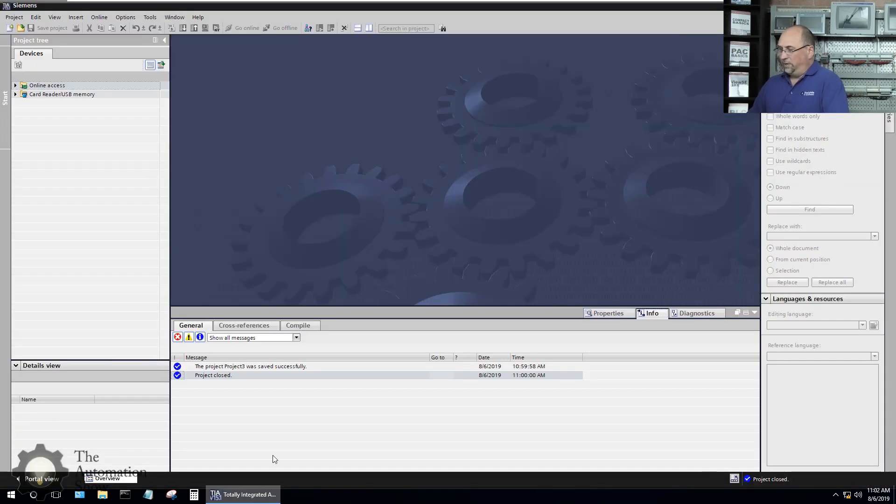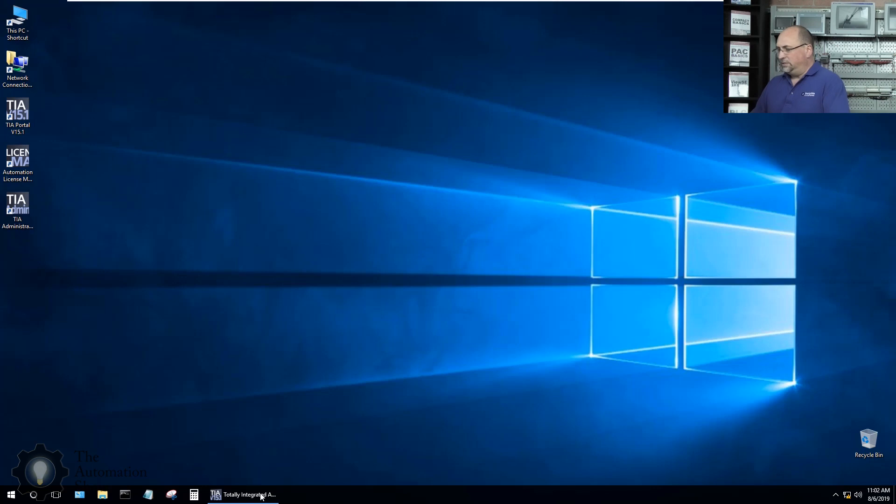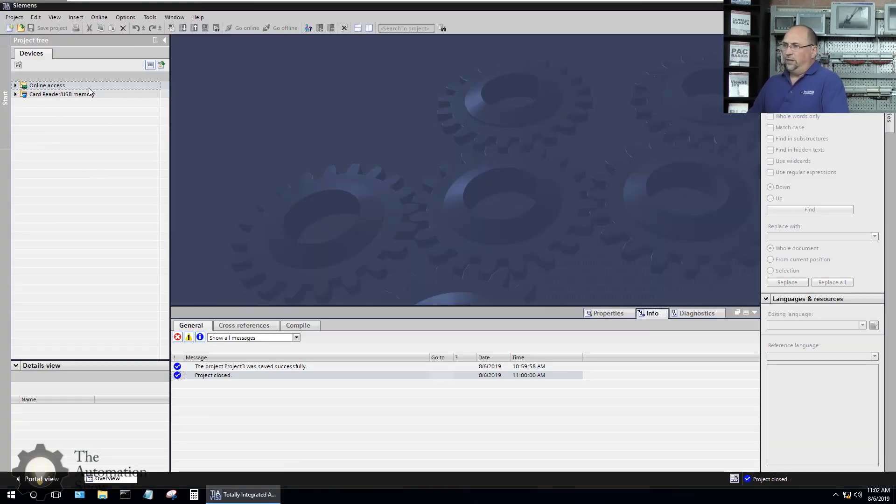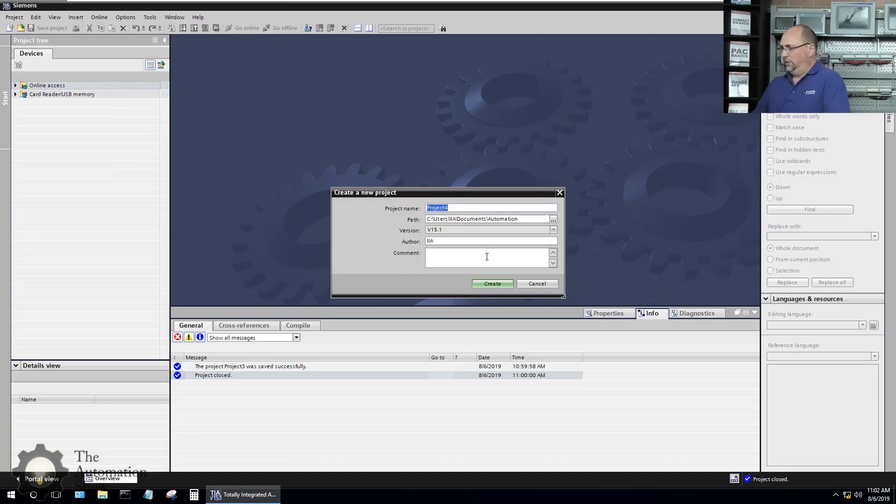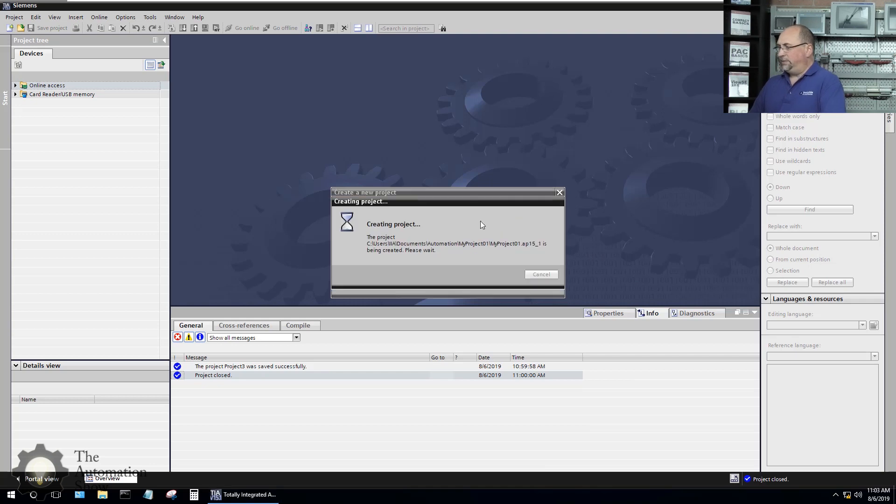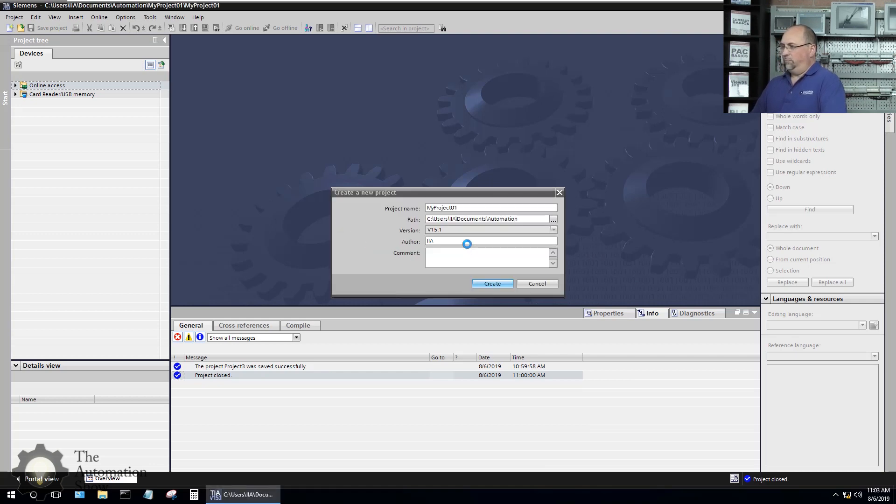All right. So let me start by opening up TIA Portal. I'm in version 15.1, I believe. Yes. And here, I'm just going to do project, new project. And we'll call this my project 01, create, and now it's creating the project for me.